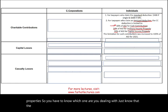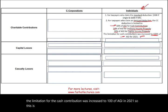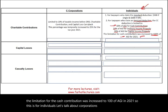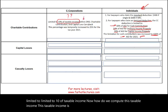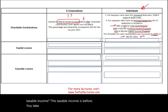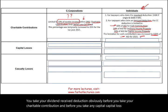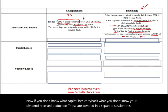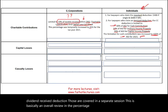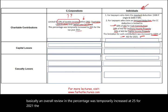Note that the limitation for cash contributions was increased to 100% of AGI in 2021. For corporations, you are limited to 10% of taxable income. This taxable income is computed before you take your dividend received deduction, before your charitable contribution, and before any capital loss carryback. The percentage was temporarily increased to 25% for 2021. The government was generous for 2021 for both individuals and corporations.